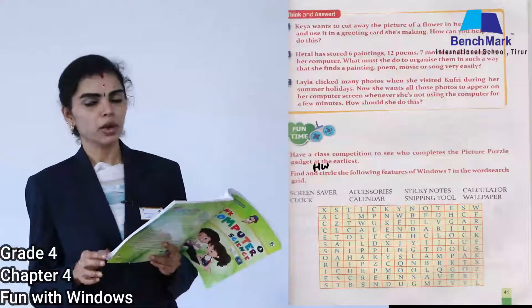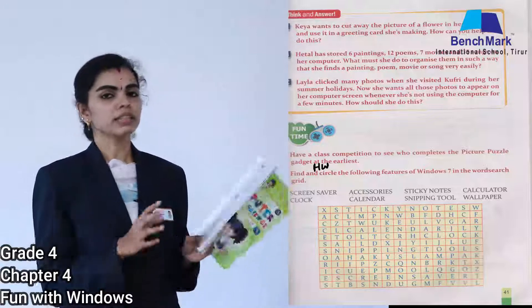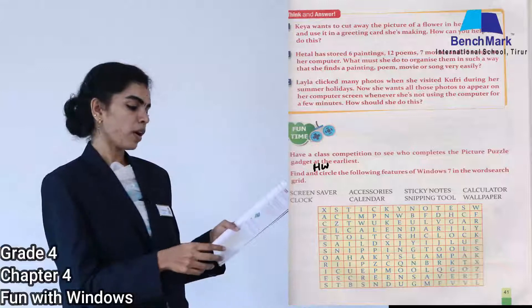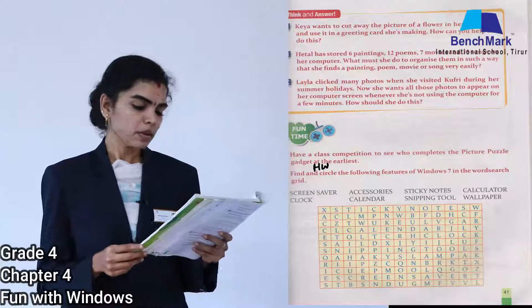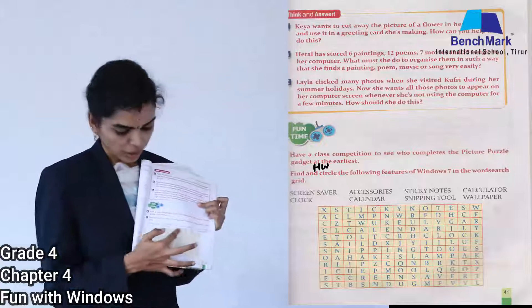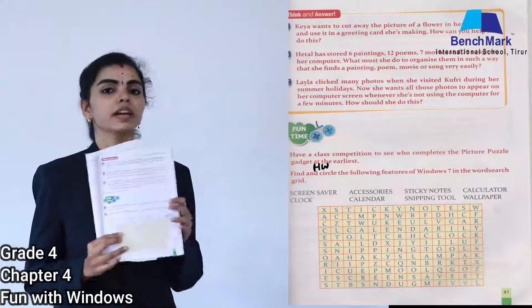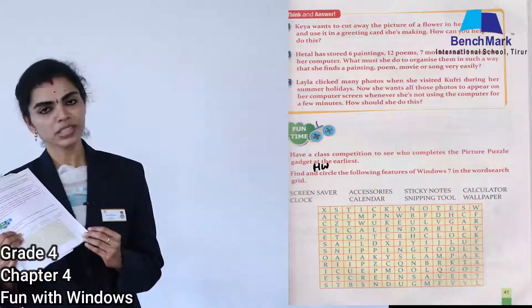I hope it is clear to you all. Now let us move on to the fun time activity at page number 41 — this is homework for you. Find and circle the following features of Windows 7 in the word search grid. The features are given, and the grid is there — you need to find and mark them. This is homework to do at home. I hope the 'Fun with Windows' chapter is clear to you all. Kindly go through your text and we will see you in the next class.